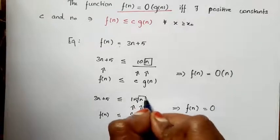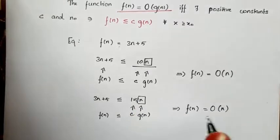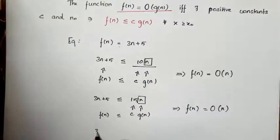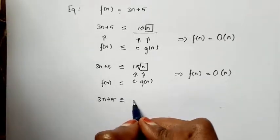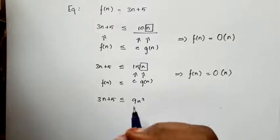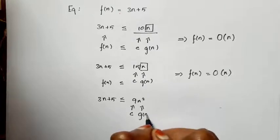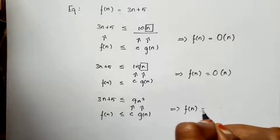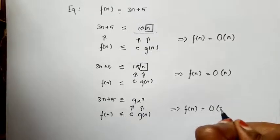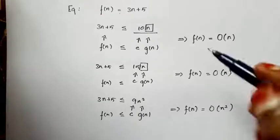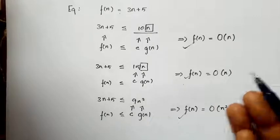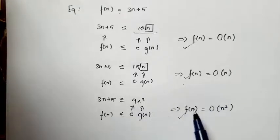There is no condition that we have to use only n. We can use n-squared also. If 3n plus 5 is less than or equal to 9 times n-squared, then the constant is 9 and g(n) is n-squared, and the condition is satisfied. So we can write f(n) = O(n²). Similarly, we can apply 2^n, 3^n, or n^n — all of these are true: f(n) = O(2^n), O(3^n), etc.